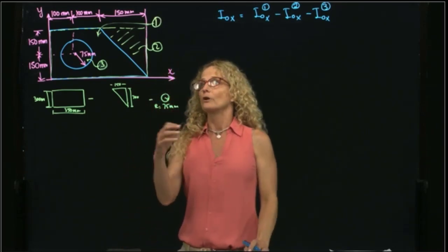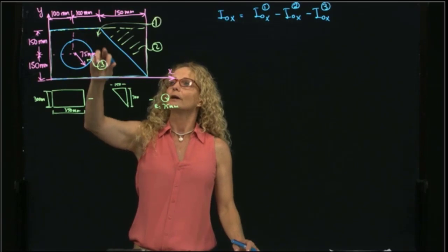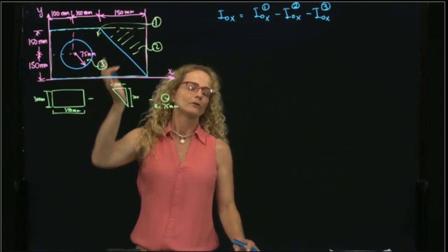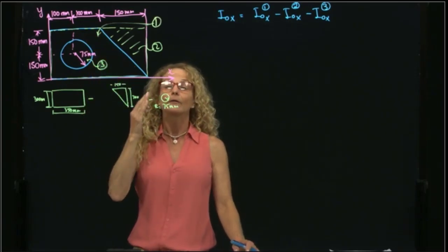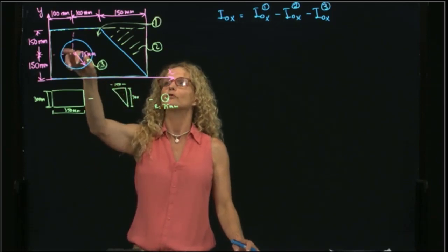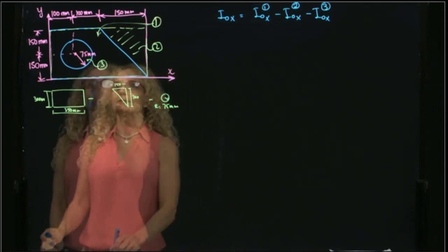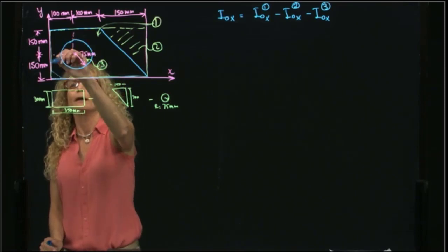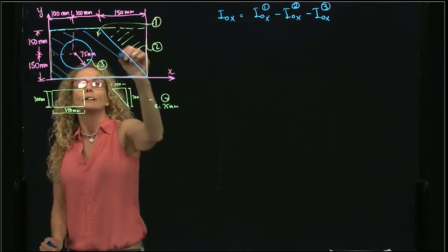As I said, you could have chosen to do a smaller rectangle and add this triangle. And that would give you exactly the same result. Of course, you always have to subtract this hole right here because my area is this one right here.